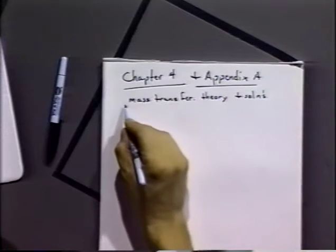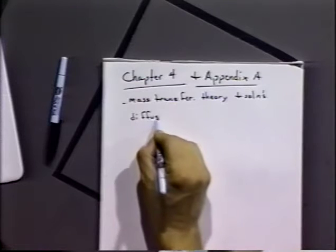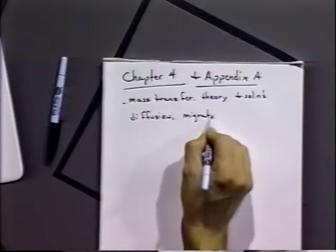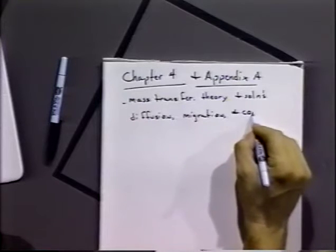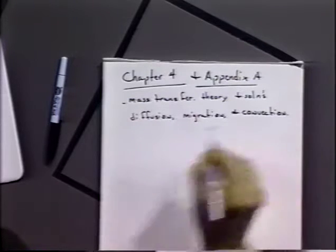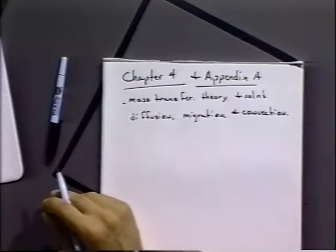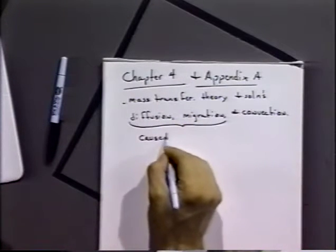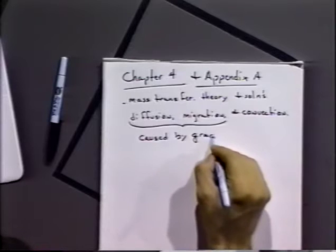As we've already discussed, mass transfer is caused by diffusion, migration, and convection. Diffusion occurs as concentration gradients develop in solution. Migration occurs when we have an external applied electric field that causes ions to migrate in response to that field. And convection occurs when we stir the solution somehow or cause it to move in a bulk fashion, thus carrying ions or molecules along with it. Diffusion and migration can be considered to be caused by gradients in the electrochemical potential.